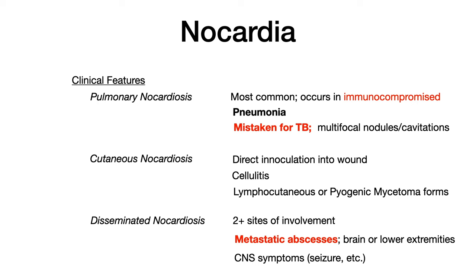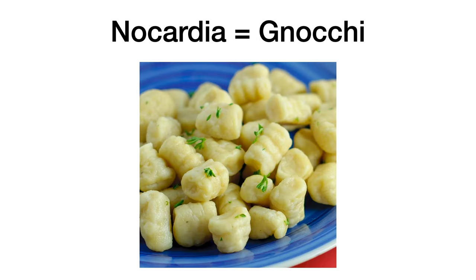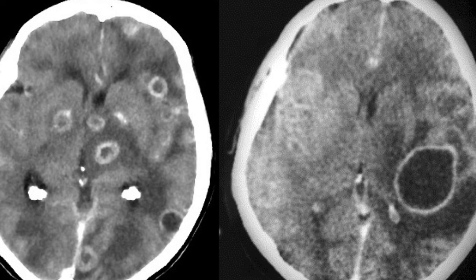Here's a mnemonic: nocardia sounds like 'gnocchi' — those little round pieces of pasta. When I see gnocchi, it reminds me to expect little gnocchis in the brain. In disseminated nocardiosis you see abscesses and ring-enhancing lesions that look like little gnocchis in the brain. So: if you see an image like this in a patient with pulmonary symptoms or a pneumonia-like presentation, and/or abscesses in the lower extremities or a lymphocutaneous or cellulitis-type infection — think nocardia. Nocardia equals gnocchi: little gnocchis in the brain, little gnocchis in the extremities, plus pneumonia.